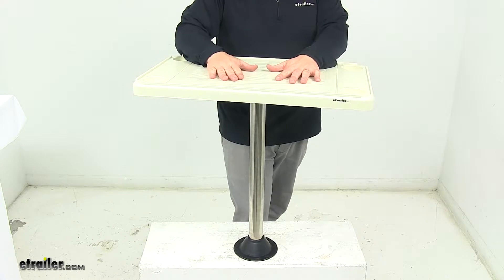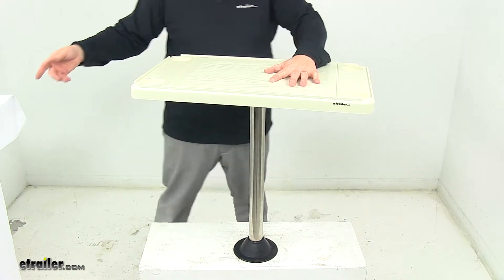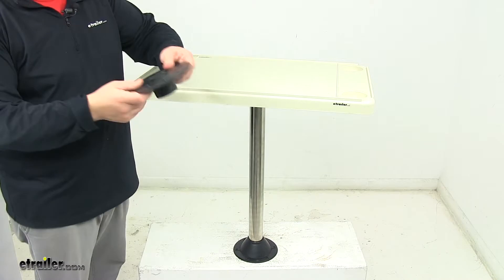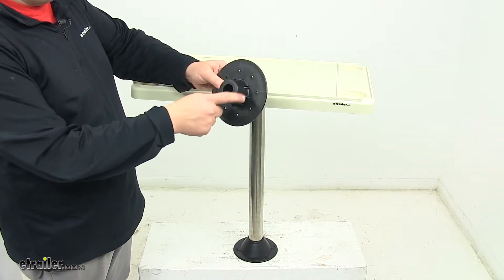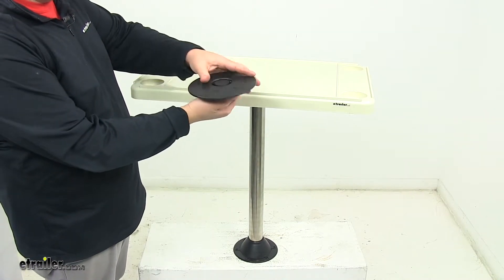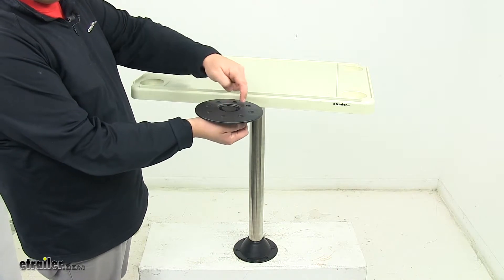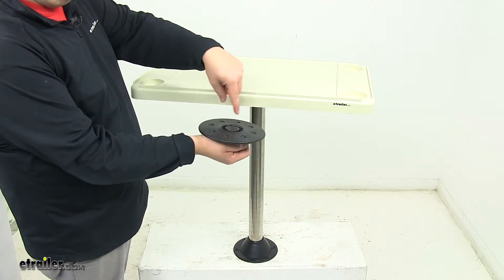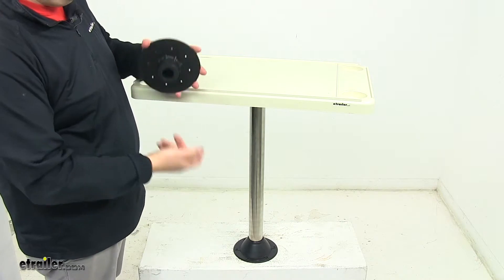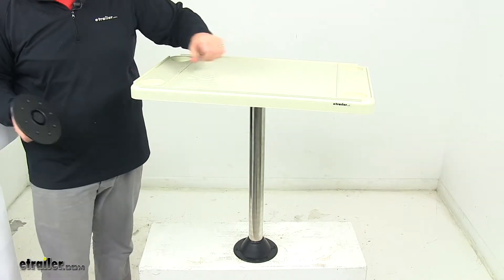Today I'm showing you the surface mount option, and I do have the actual base for the recessed flush mount option. This would require a hole for this area to fit into, and then you bolt it to your boat's floor, and then the leg fits right into that pocket there, and then the rest of it looks identical to this.